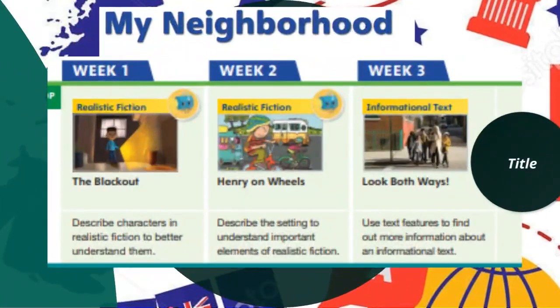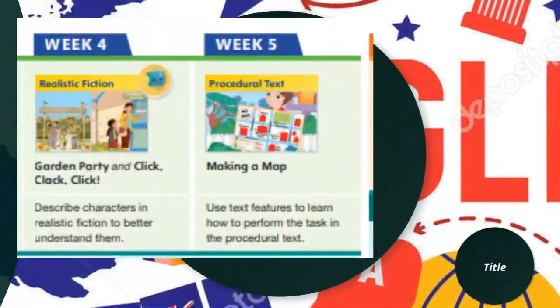In week four we will learn about realistic fiction and read 'Garden Party' and 'Click Clack Click,' describing characters in realistic fiction. Week five is a procedural text — we will read 'Make a Map' and use text features to learn how to perform tasks in a procedural text.